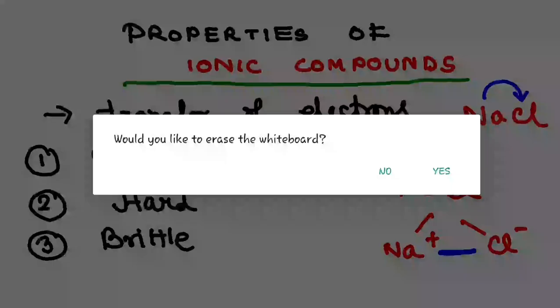Next, number four, ionic compounds have, this is very very important, have high melting and boiling points. Why so? Because ionic compounds are formed by ions, cations and anions.